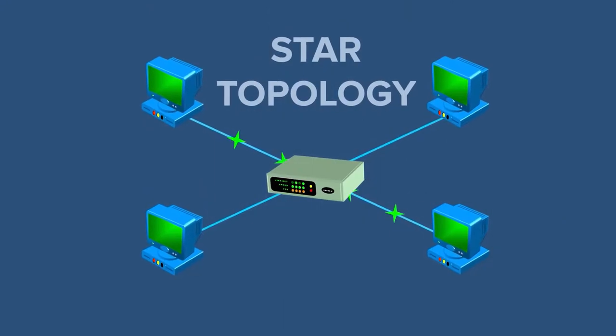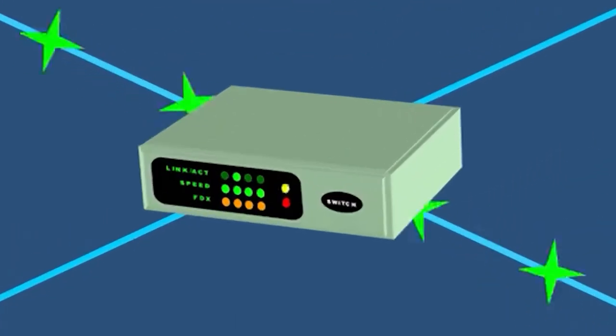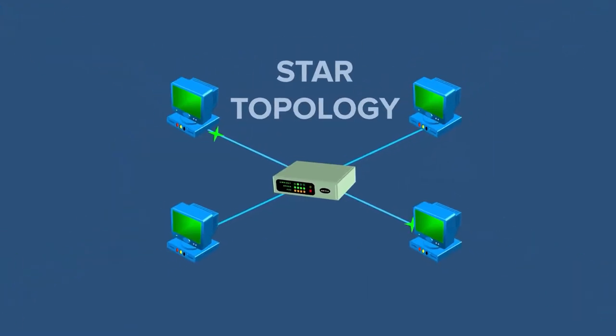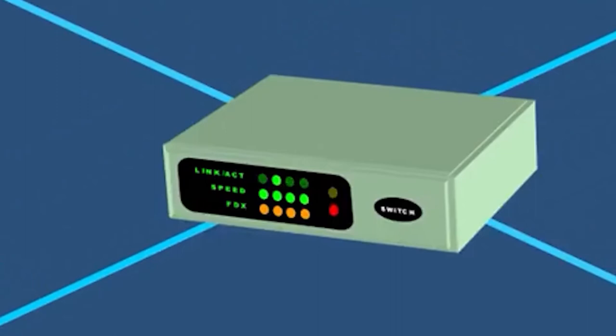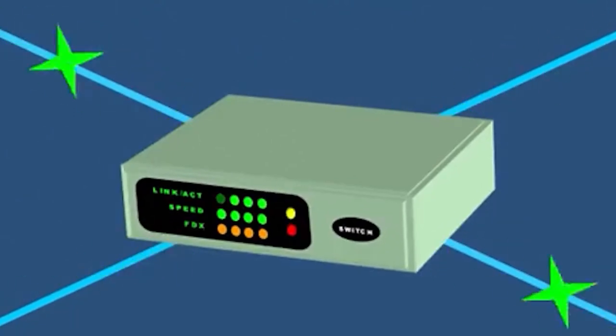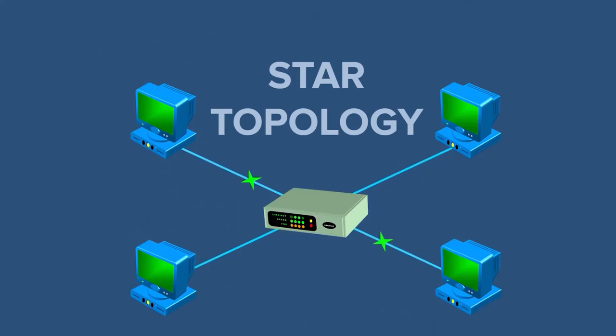Star topology. In a star topology, every node in the network is connected to a central computer or node which takes care of the network. Every device in the network has a direct connection to the central node and every node is indirectly connected to other nodes using the central node.